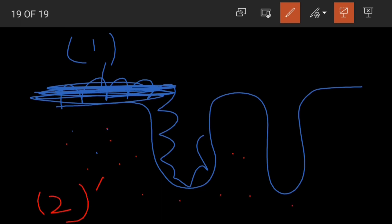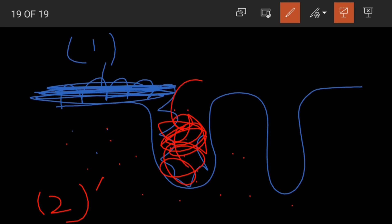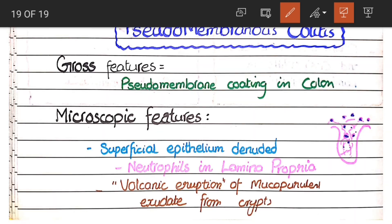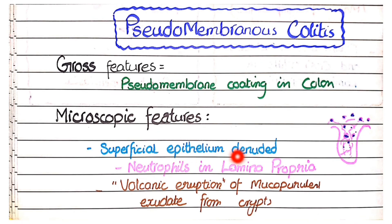Thirdly, pseudomembranous colitis is characterized by a lot of exudation. The exudates and neutrophilic abscesses accumulated here create an appearance as if a volcano is erupting — this feature is called volcanic eruption. So the features are: superficial epithelium is denuded, neutrophils in the lamina propria, and volcanic eruption of mucopurulent exudate from the crypts.